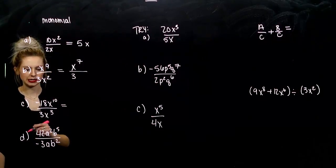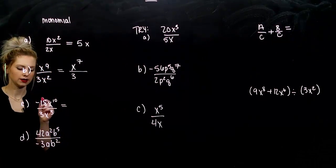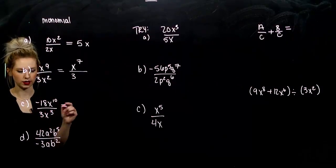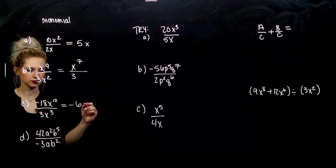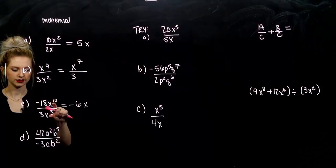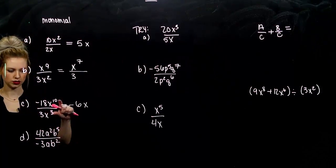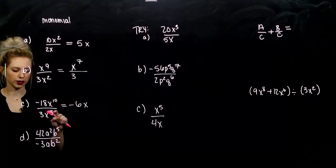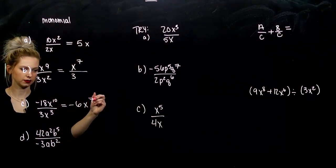For part c, looking at the coefficient. Negative 18 divided by 3 will give me negative 6. And how many factors of x am I looking at? Same base and division, so we take 10, subtract 3. Left with 7.